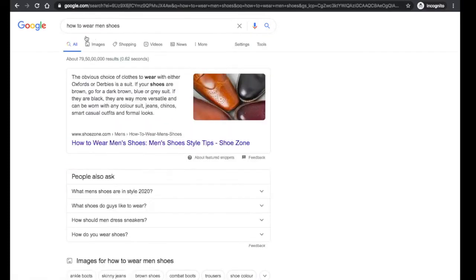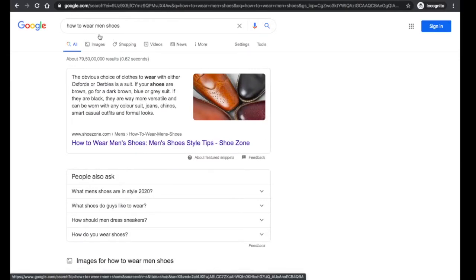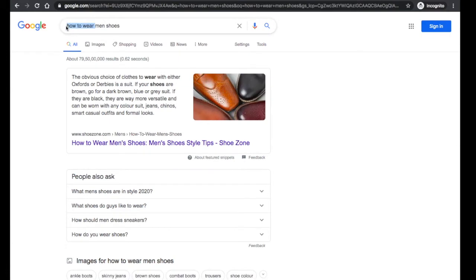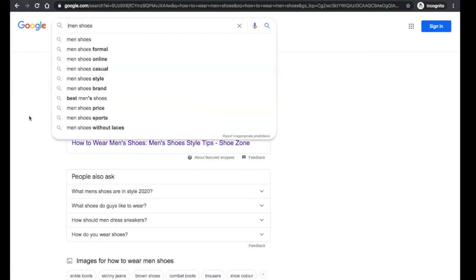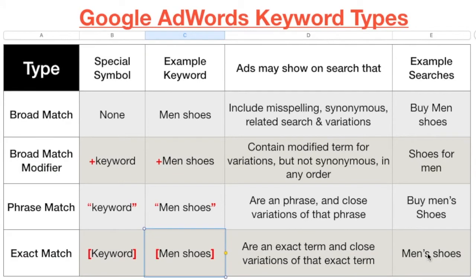With exact match, if someone searches 'how to wear man shoes,' your advertisement will also not show. It will only show when someone writes exactly 'man shoes.' Use this when you want to show your advertisement for a very specific keyword only. It's the opposite of broad - in broad, misspellings and synonyms trigger your ad; in exact match, only your specific keyword does.